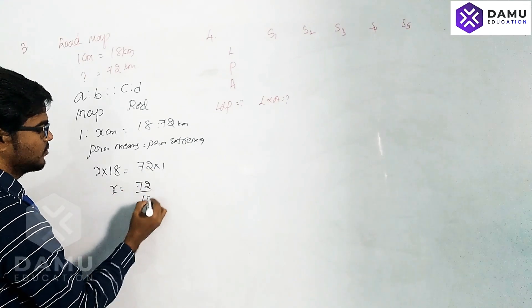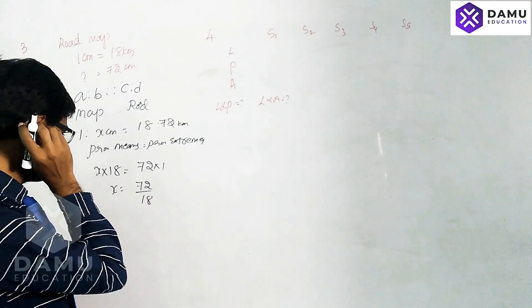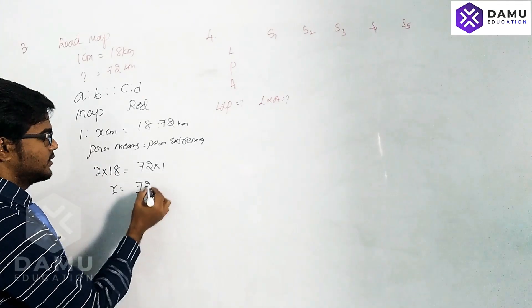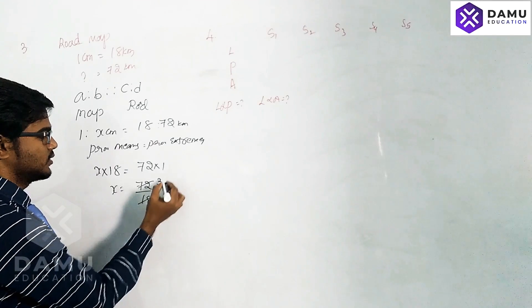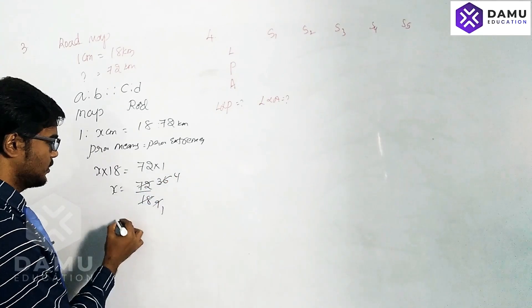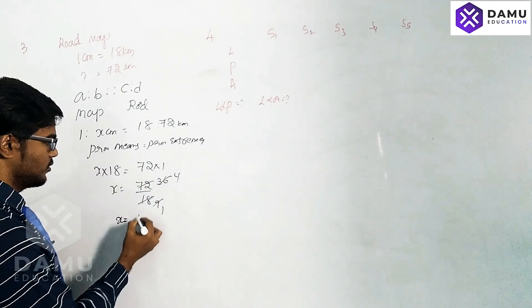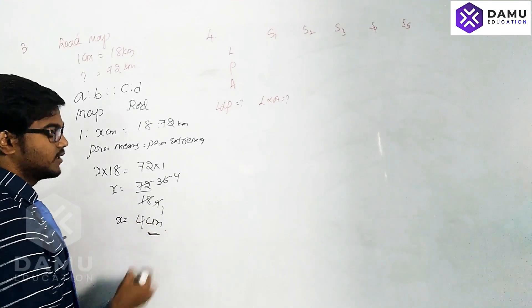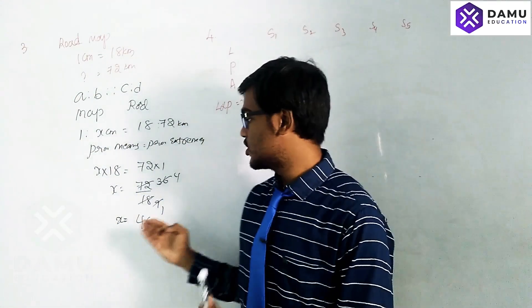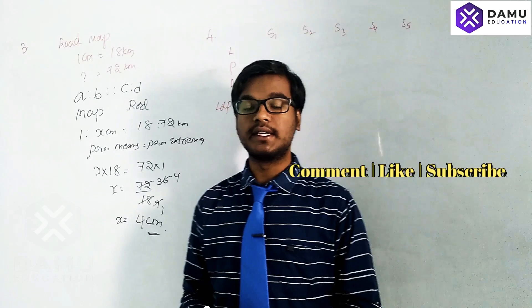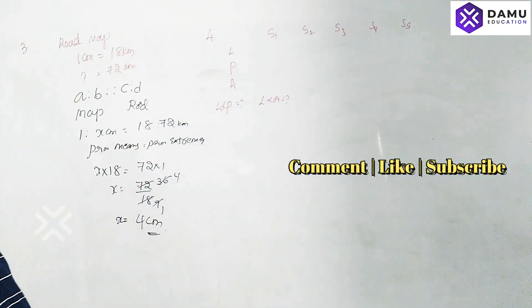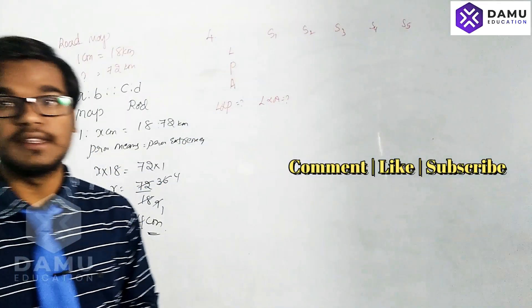So x equals 72 divided by 18, which gives us 4. Therefore, the distance traveled on the map is 4 centimeters.